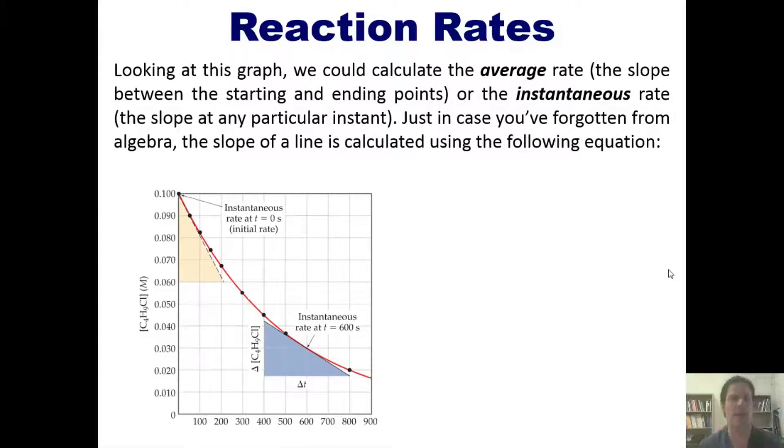So looking at this graph, we could calculate the average rate over the entire reaction, which would be the slope between the starting and ending points, the starting point up here at the very, very top, and the ending point all the way down here. Or if we wanted to, we could calculate the instantaneous rate at any given moment.